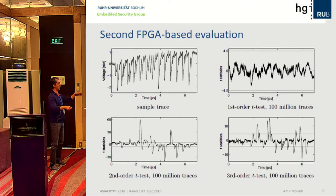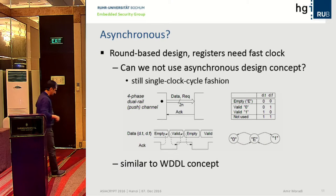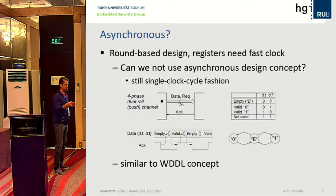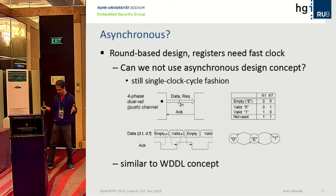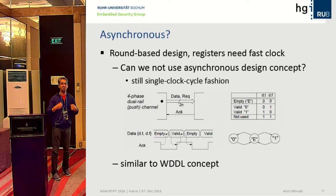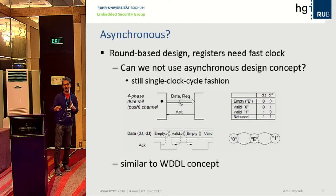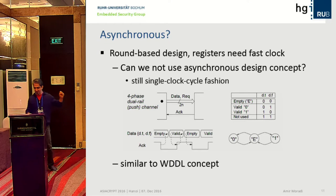To avoid second and third order leakage, noise addition combined with the first-order secure implementation makes practical exploitation very hard. However, the issue is that a round-based implementation requires a fast clock. Industry pointed out that adding a separate fast clock (e.g., 100 MHz) consumes energy even when the encryption function is idle. Or, achieving the lowest latency might require 400 MHz, which is not available on all platforms.